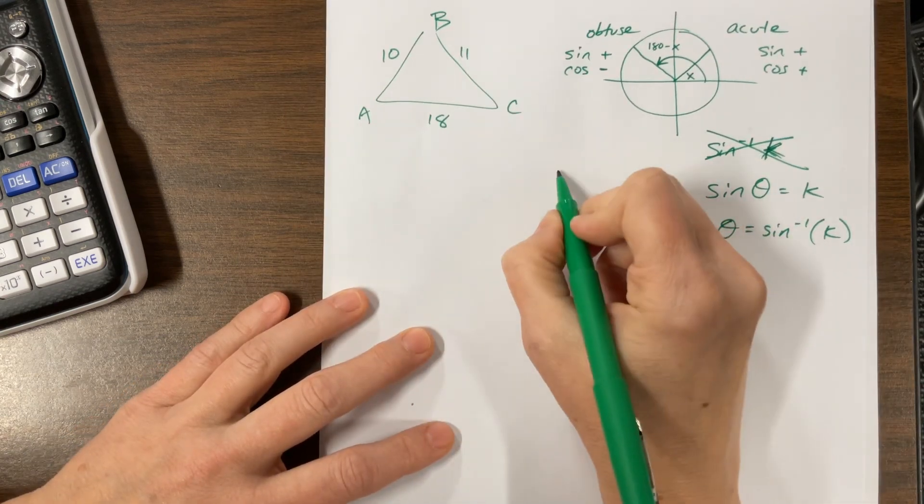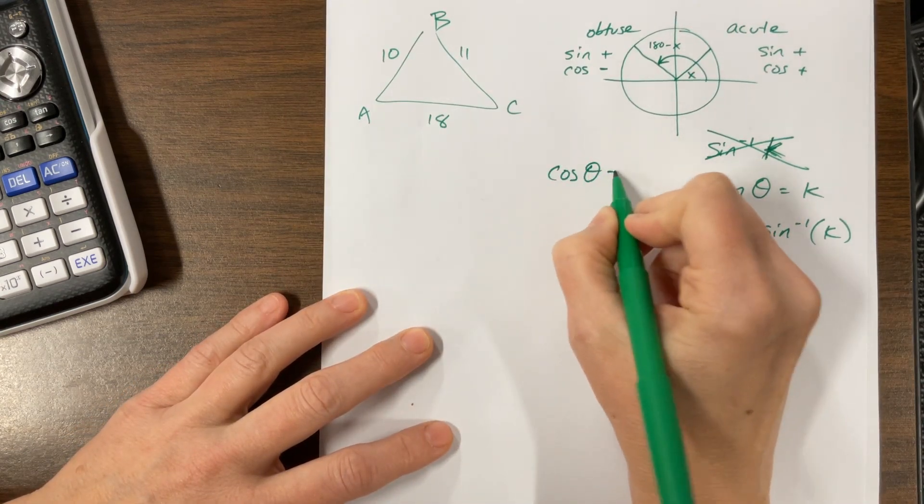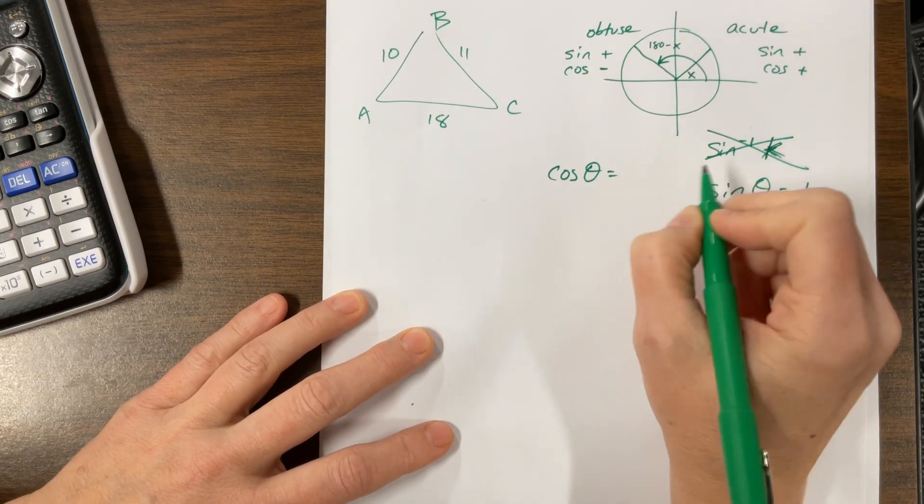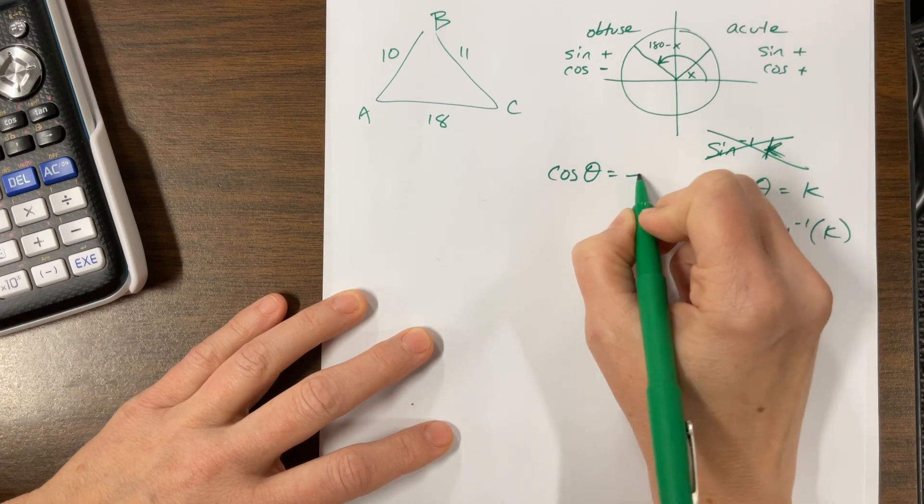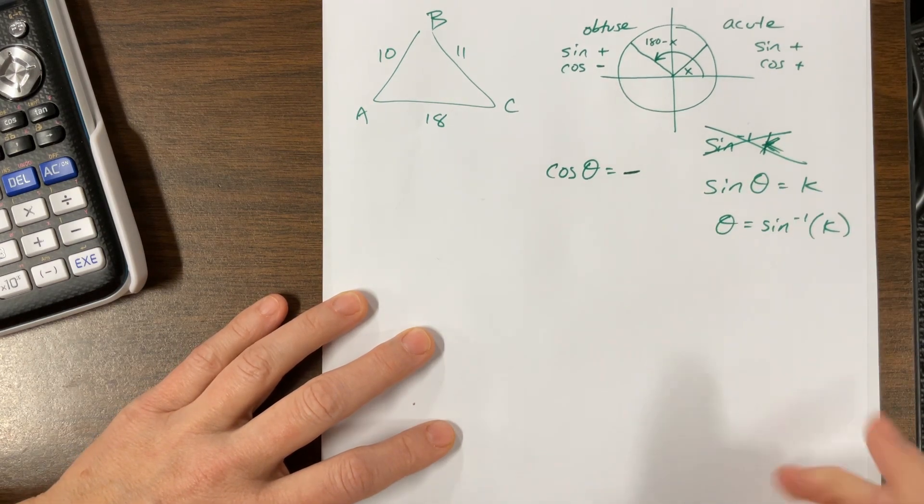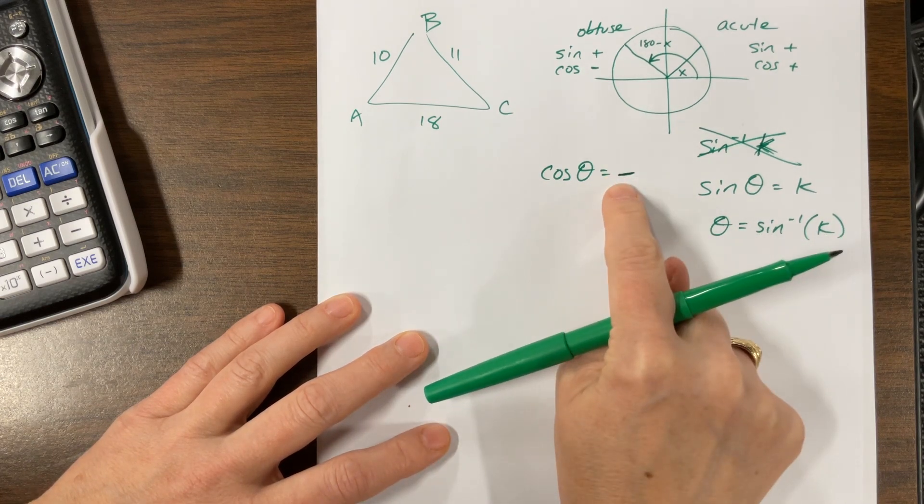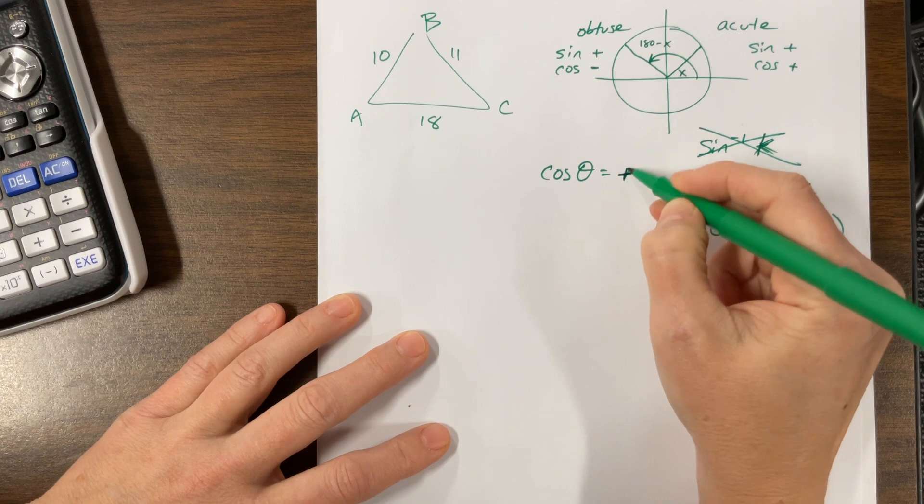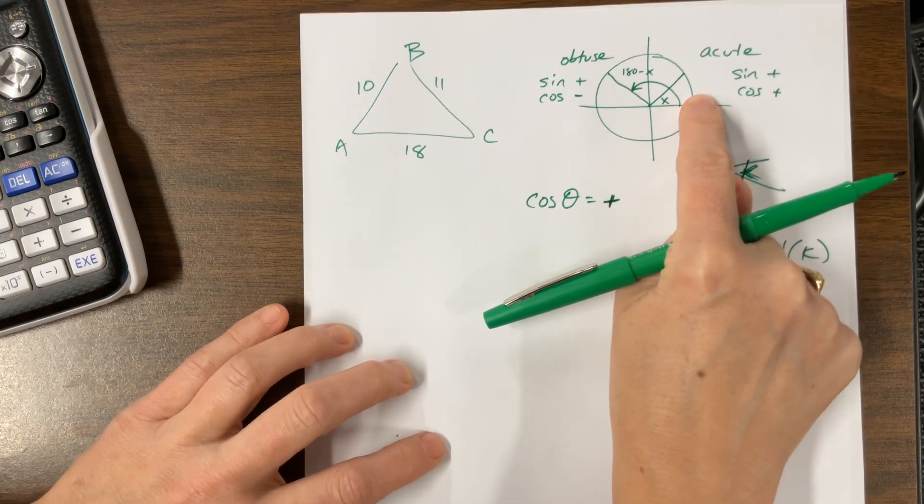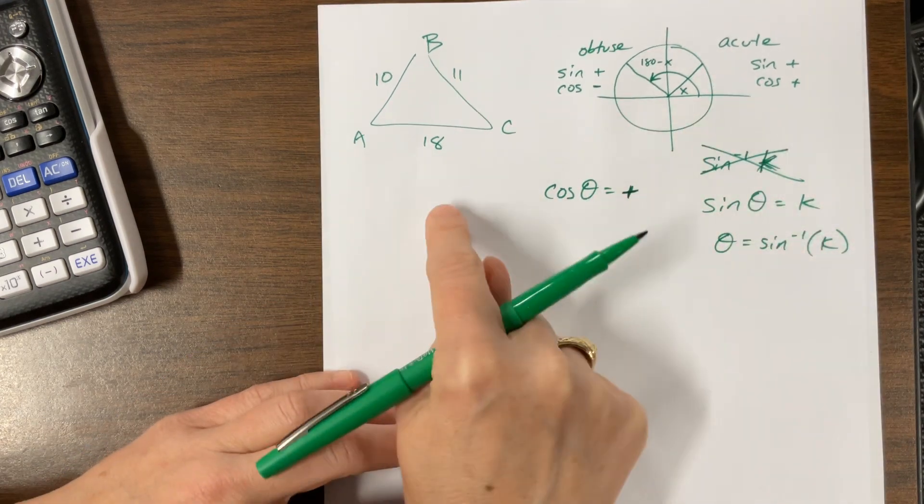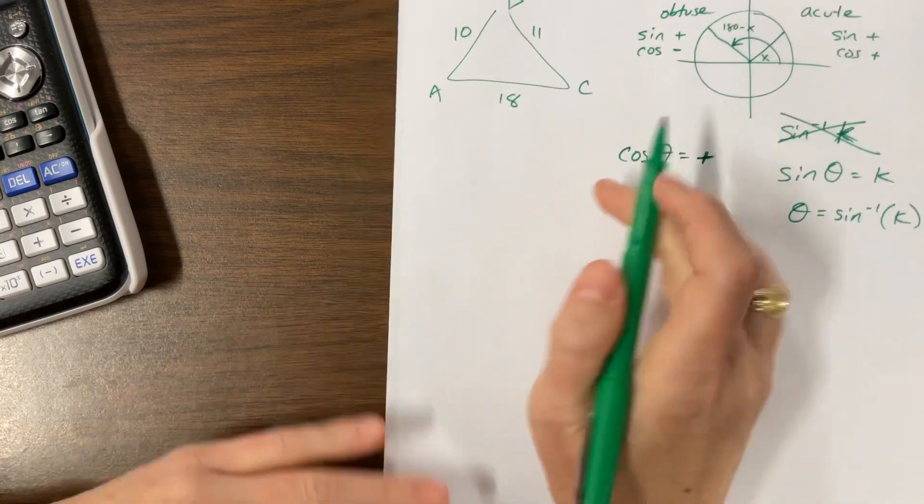Meanwhile, cosine, if I take, if I have cosine of theta is equal to some negative value, let's just call it negative. We're just going to say this is negative. Then this has to be in quadrant two. It's going to give me the obtuse angle. If I'm taking the inverse cosine of something positive, it's going to give me an acute angle, and it's going to be in quadrant one.